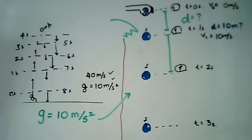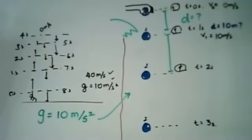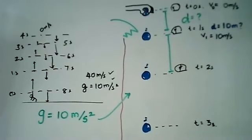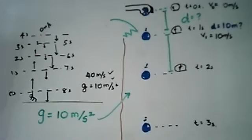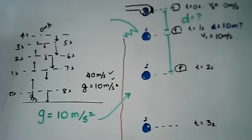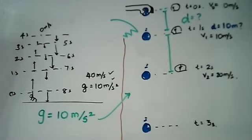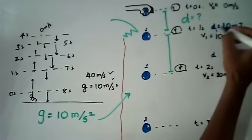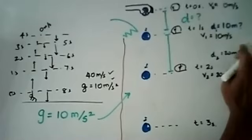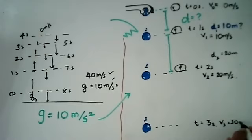What are we forgetting? Acceleration. The object is accelerating every instant — so going by that same argument, v2 equals 20 meters per second, which would suggest d2 is 20 meters, and v3 equals 30 meters per second, so d3 is 30 meters. The distances are increasing — but what is the problem with that reasoning?